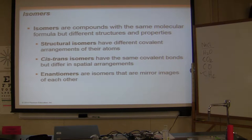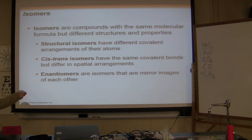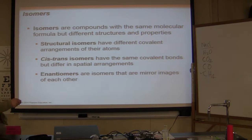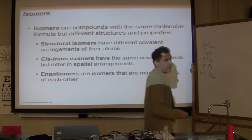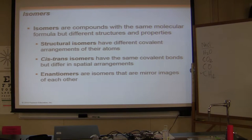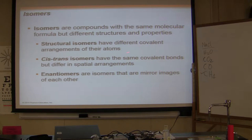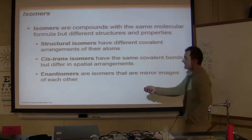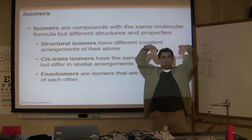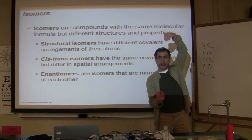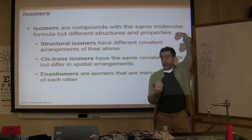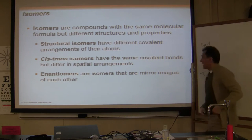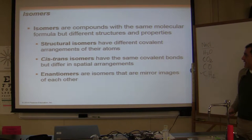Do not confuse isomers and isotopes — isotopes are radioactive material. Isomers are compounds with the same molecular formula but different structures and properties. Structural isomers have different covalent arrangements of their atoms. Cis and trans isomers have the same covalent bonds but differ in spatial arrangement — cis means functional groups are on the same side, trans means they're on opposite sides.